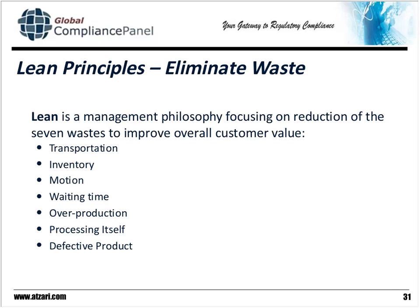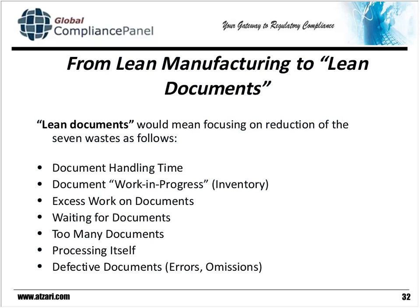If we go back to lean principles, lean principles teach us we want to eliminate waste. We have the seven wastes, and if we can eliminate those, we focus on what's called value-added. Making the transition from lean manufacturing to lean documents, we would look at how to reduce document handling time, document work in process, excess work on the documents, waiting for documents, too many documents being handled, the processing of the ECOs themselves, and then we have to deal with defective documents that have errors and omissions. Our goal with lean documents is to drive away these forms of waste while, of course, being compliant. We're not here to go out of compliance, but errors and waste and duplication are more likely to lead us to noncompliance and nonconformances.